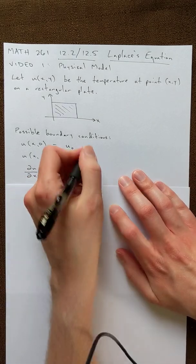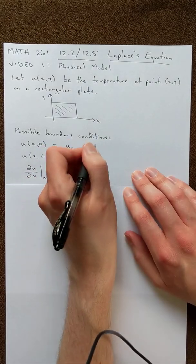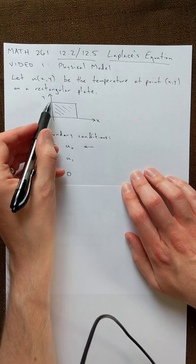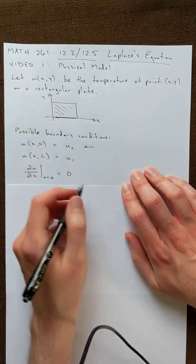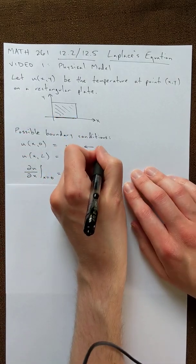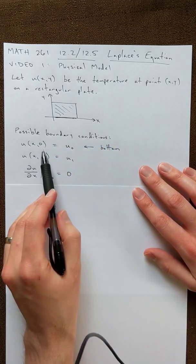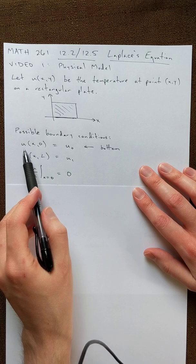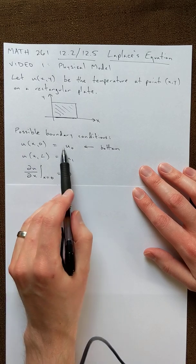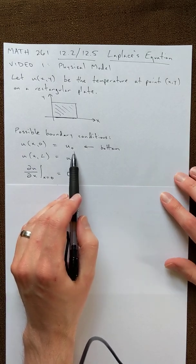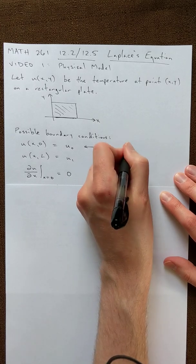So the first one means we're holding y equals zero. So let's see, y equals zero would be height zero. That means we're looking at the bottom. And if u of x,0 is u_0, it's just always going to be u_0. That means that the bottom is a constant temperature.